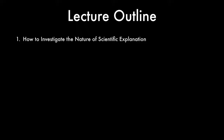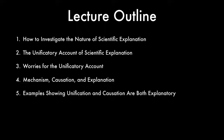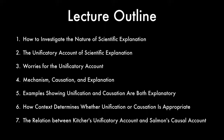1. How to investigate the nature of scientific explanation. 2. The unificatory account of scientific explanation. 3. Worries for the unificatory account. 4. Mechanism, causation, and explanation. 5. Examples showing unification and causation are both explanatory. 6. How context determines whether unification or causation is appropriate. 7. The relation between Kitcher's unificatory account and Salmon's causal account.